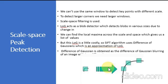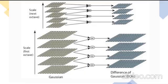But this Laplacian of Gaussian is a little costly, so SIFT algorithm uses Difference of Gaussian, which is an approximation of LoG. Difference of Gaussian is obtained as the difference of Gaussian blurring of an image with two different sigma values. This process is done for different octaves of the image in a Gaussian pyramid. It is represented in the image.